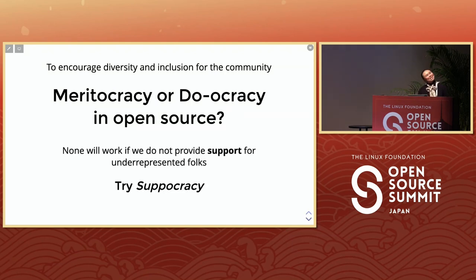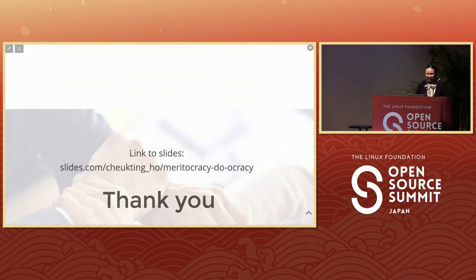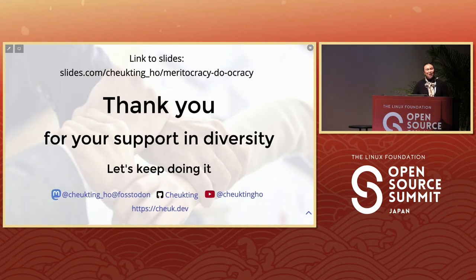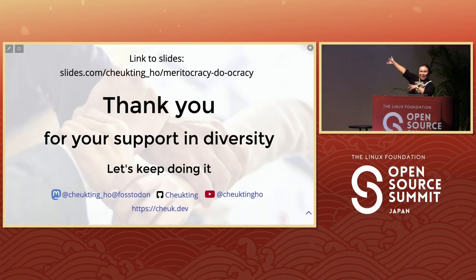Key takeaways: not everybody has the same access to resources — acknowledge that. Pay developers in open source at all levels, not just maintainers, like Outreachy pays interns. Provide education for those with less access, sometimes in other countries. Emphasize the success of underrepresented people, put them in your presentations, and provide safe environments through codes of conduct. Maybe try do-ocracy — that might be the way to do it. Thank you very much for attending.